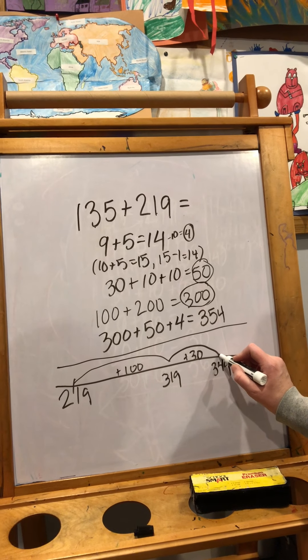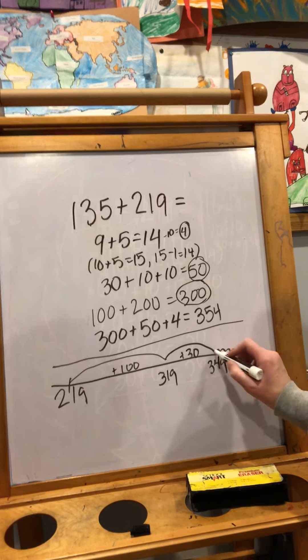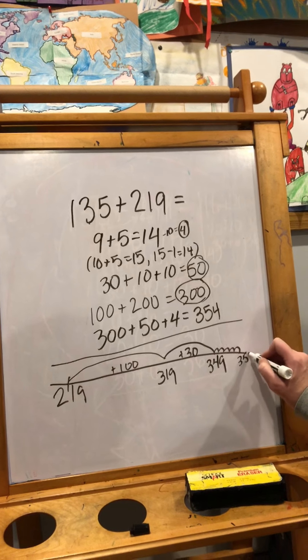So when I jumped five at the end, one, two, three, four, five, that gets me to 354.